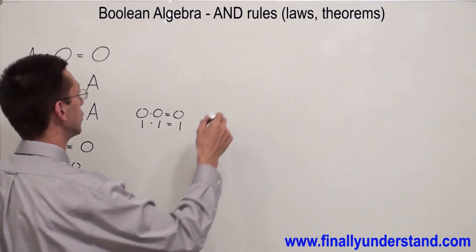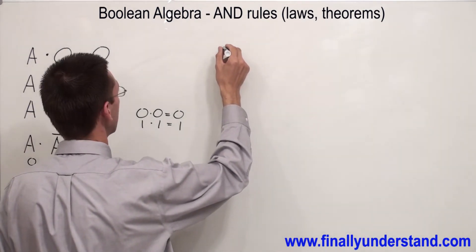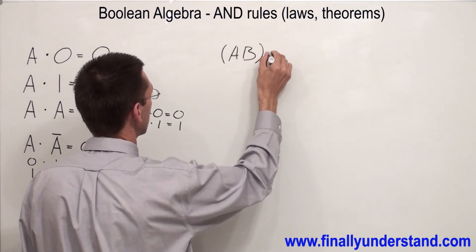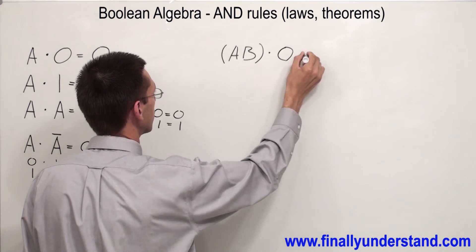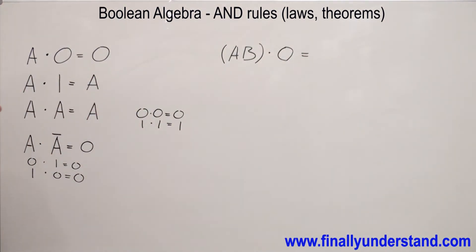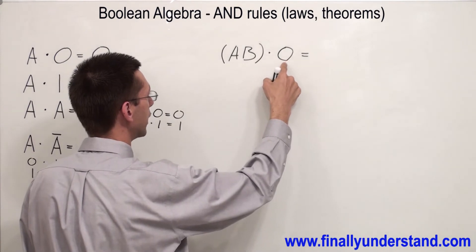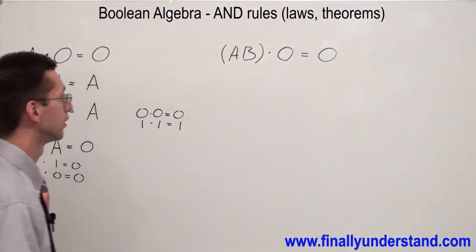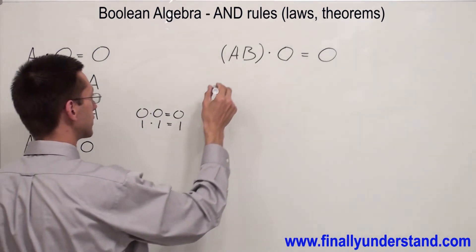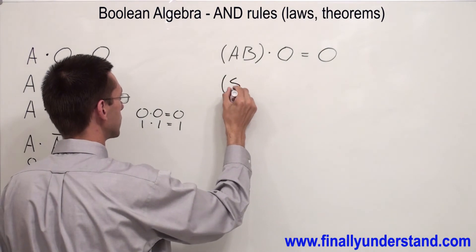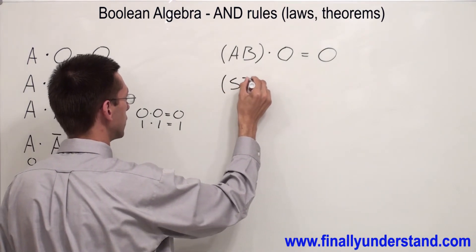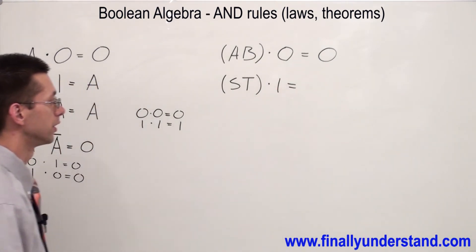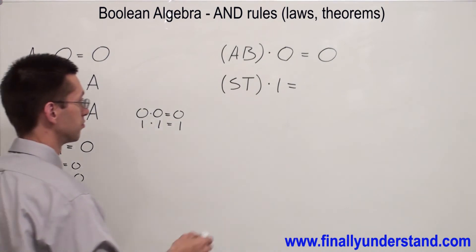So this is why A times A-not is equal to zero. Let's do some other examples. For example, I have A·B times zero. Again, the concept is exactly the same — anything multiplied by zero is going to give me zero. Another example: I have S·T times one, so the answer is nothing else, just S·T.